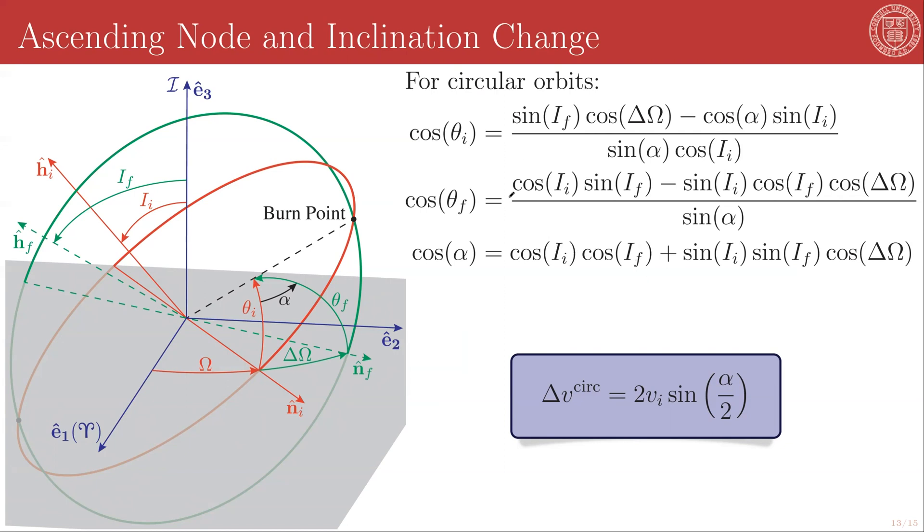Again, these are just purely geometric relationships that you get from this diagram. And your circular orbit delta V requirement is exactly the same as it was in the previous case, two times the initial velocity times sine of half the burn angle.